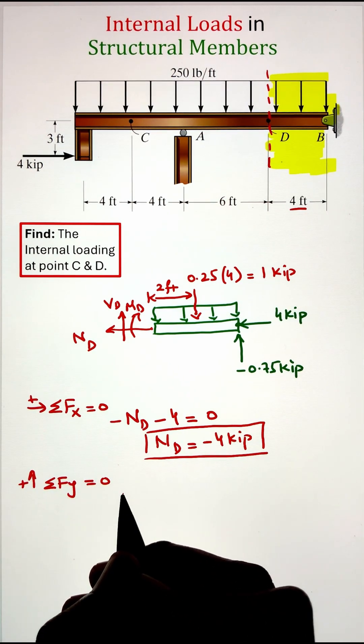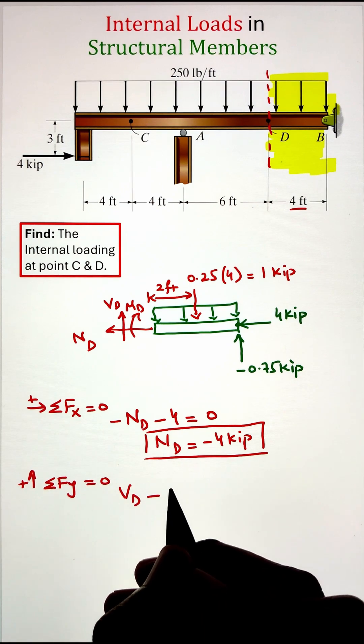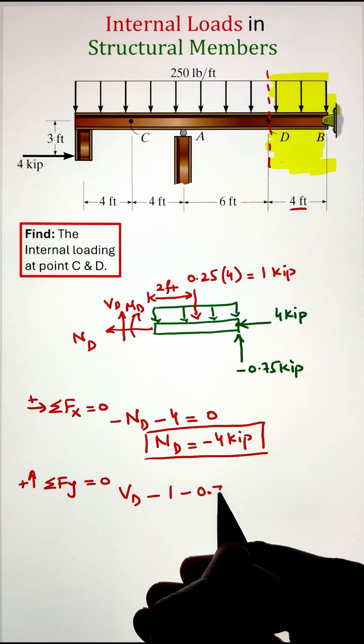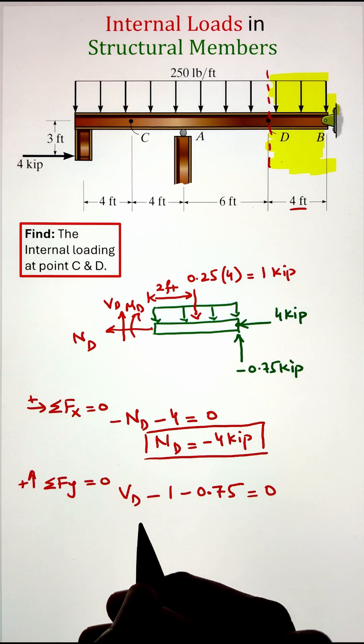Next we can go ahead and write summation of forces in the vertical direction equals zero, which gives us our value of shear force equals 1.75 kilopounds.